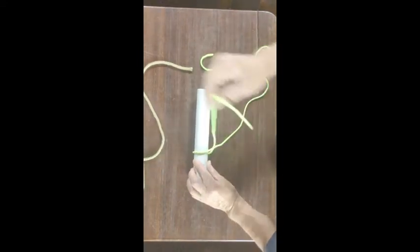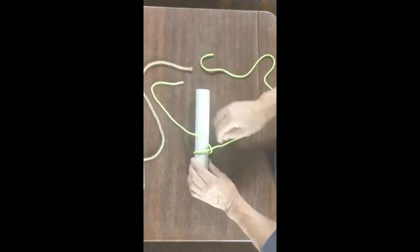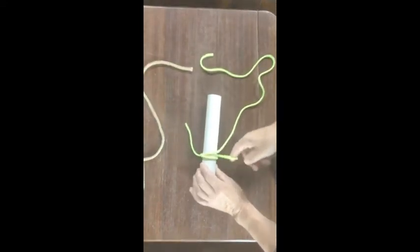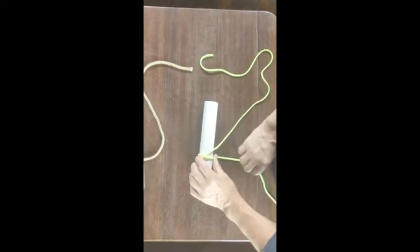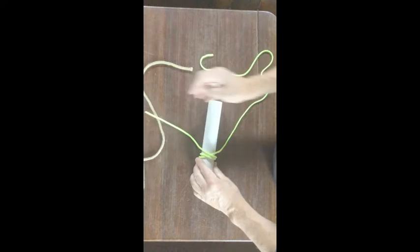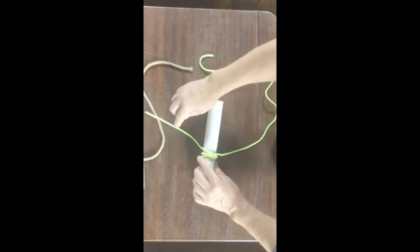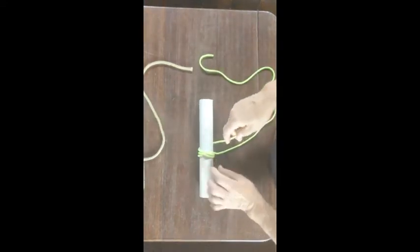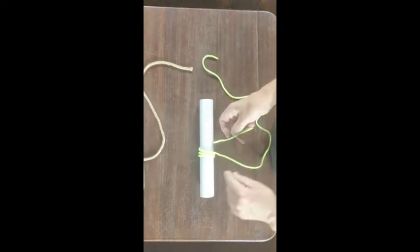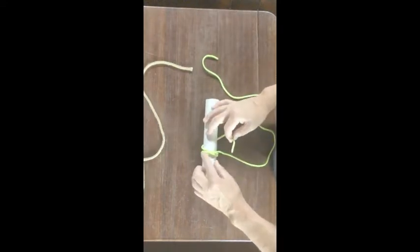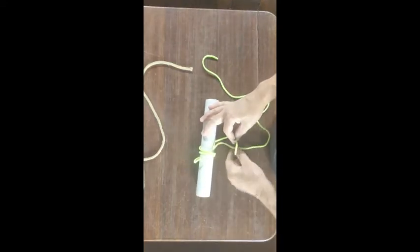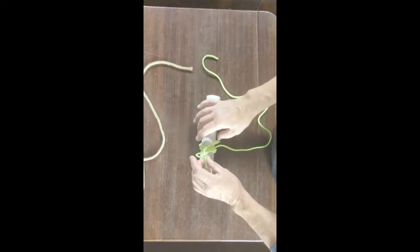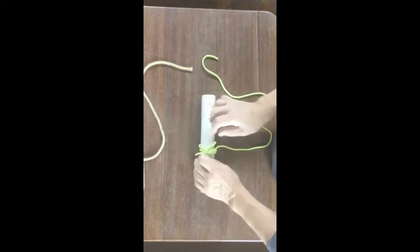Remember this could be a rope, could be anything. Over the top of the standing part, come underneath, over the top of the standing part a second time, but come underneath on the opposite side this time. Find the initial turn from the standing part, so that's that one there, and simply tuck the working end through.